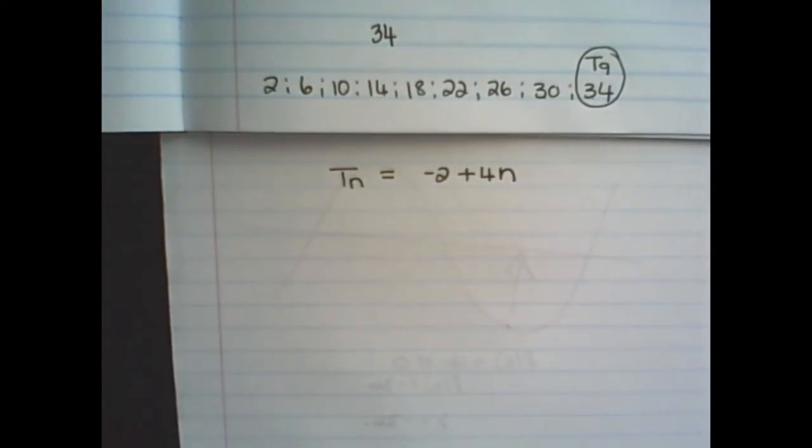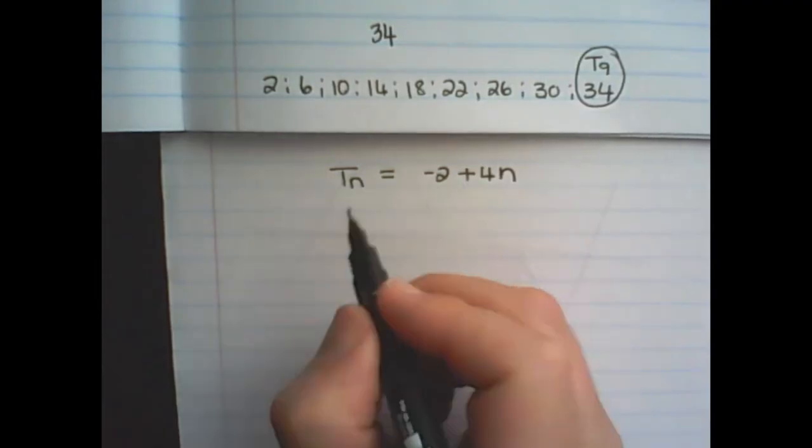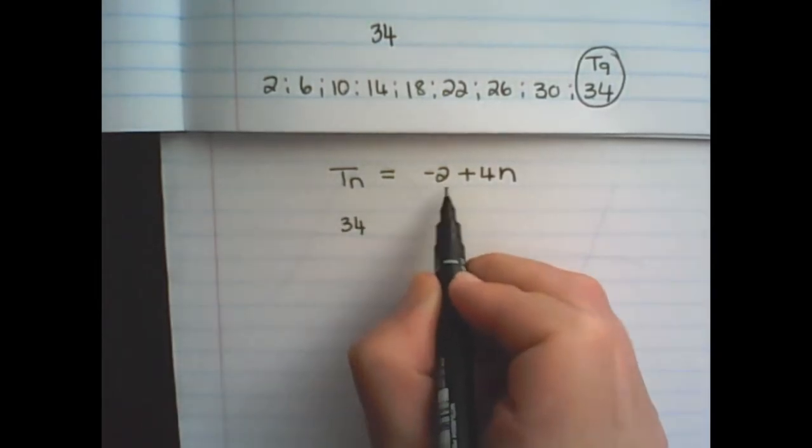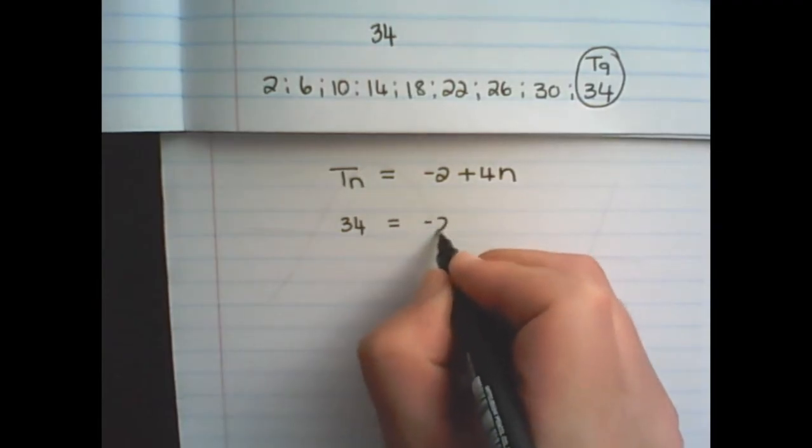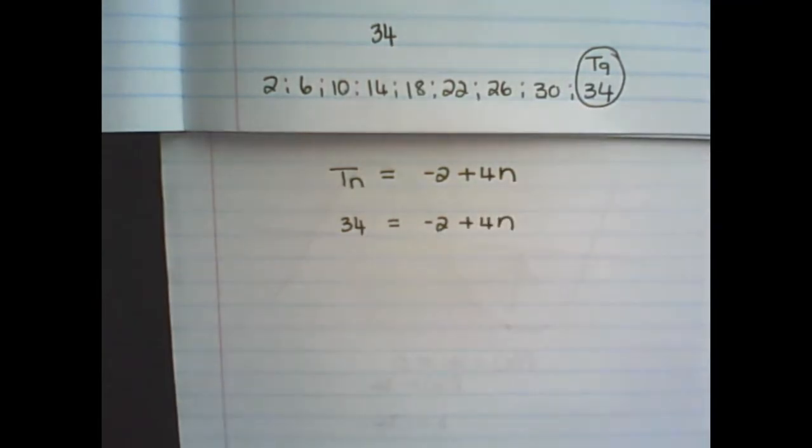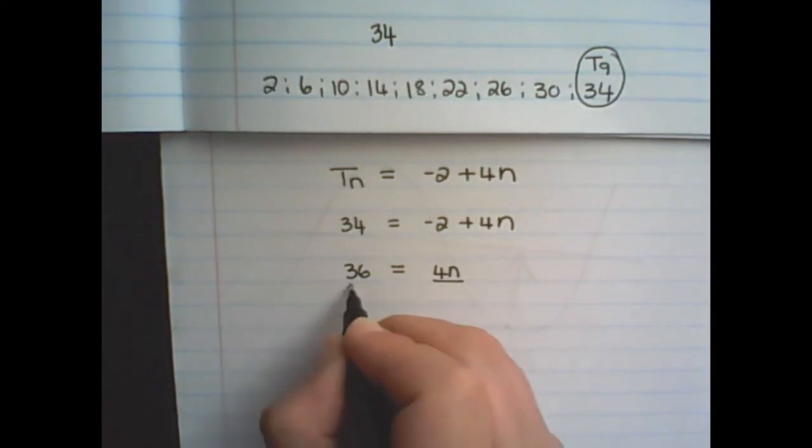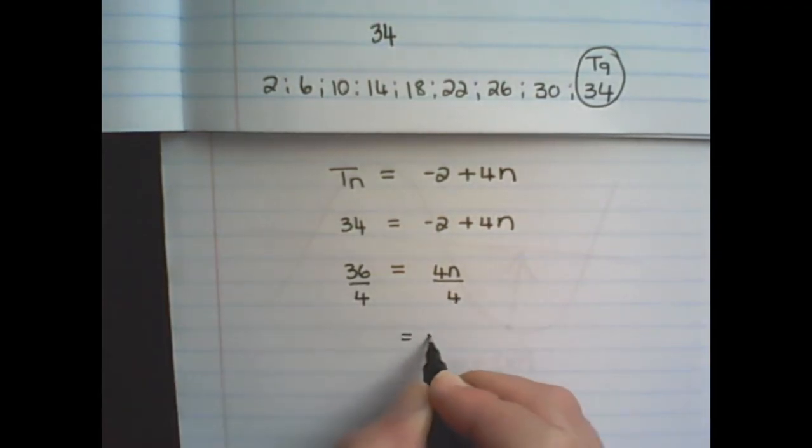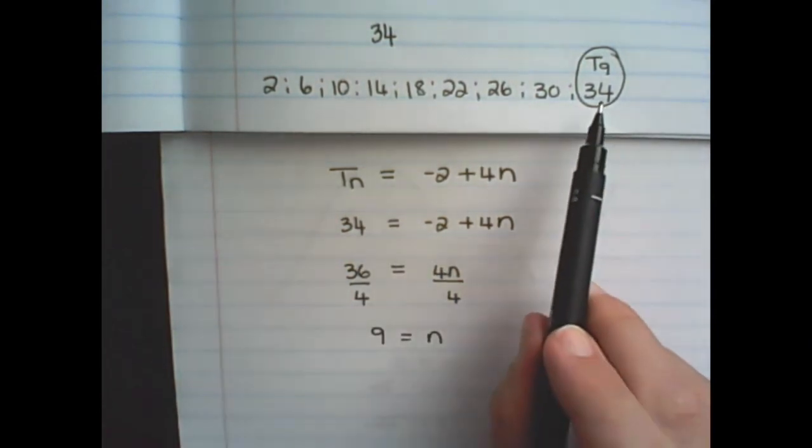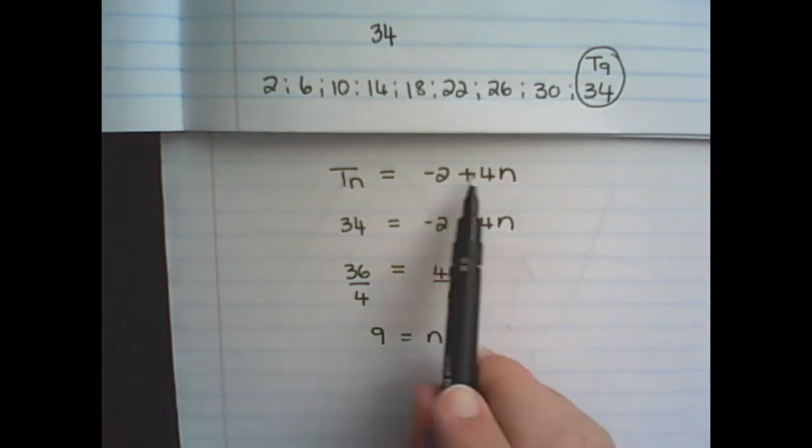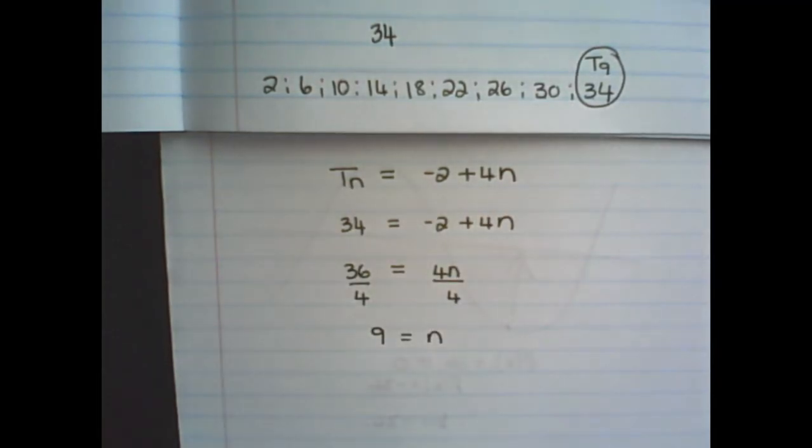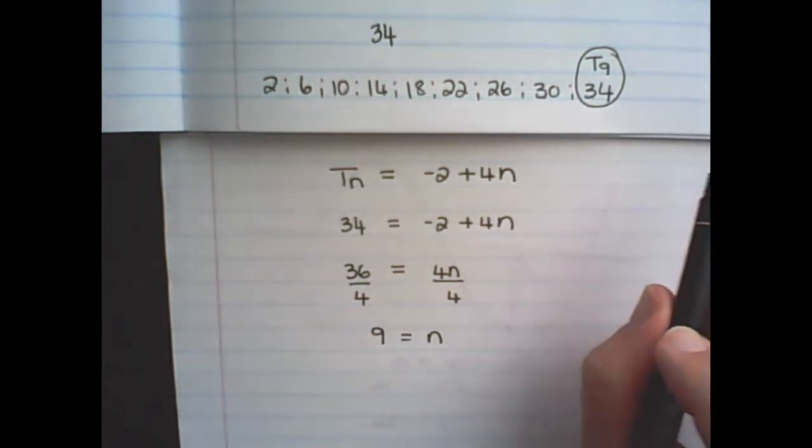But a simpler and safer way to find which term is equal to 34 is to simply replace Tn with 34 in our general term. And then I solve for n. So I bring the 2 over. And then I divide both sides by 4. So now I know the 9th term in the pattern is equal to 34. And this is especially useful when we use larger numbers or are further on in the pattern.